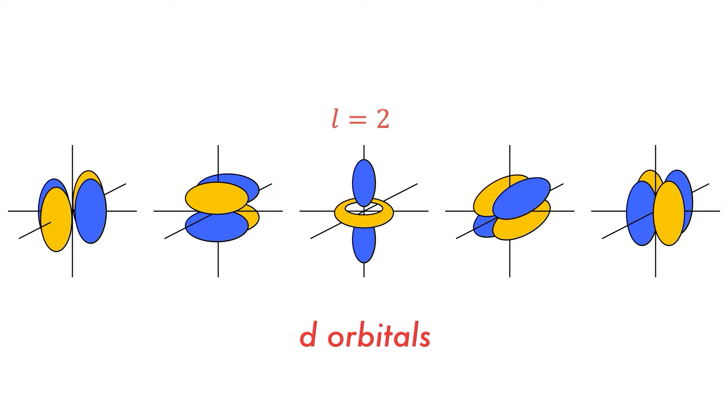If L is equal to 2, then it is the d orbitals that are being considered, which have more complicated shapes than the s or p orbitals we just saw. There are five of these per energy level.